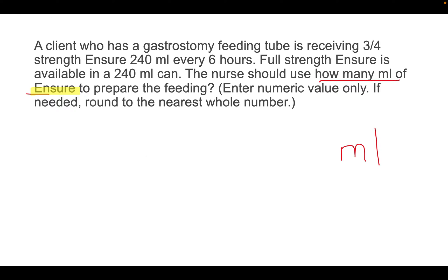This question says a client who has a gastrostomy feeding tube is receiving three-quarter strength Ensure, 240 ml every six hours. Full strength Ensure is available in a 240 ml can. The nurse should use how many ml of Ensure to prepare the feeding? The first thing I do is underline the important numbers and identify what unit the answer should be in — in this case, ml.